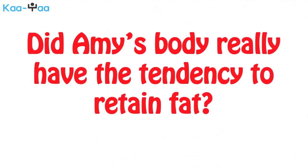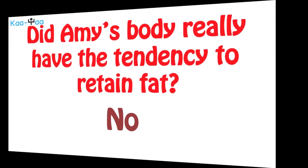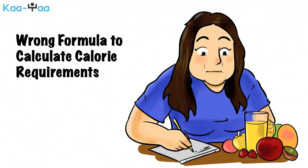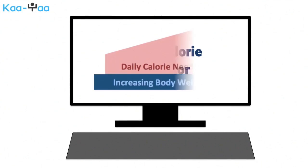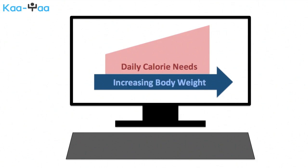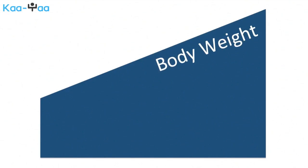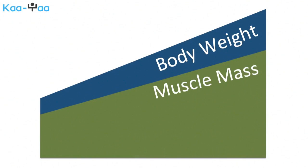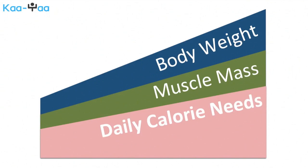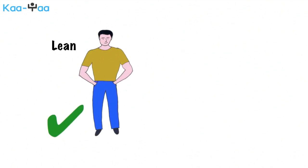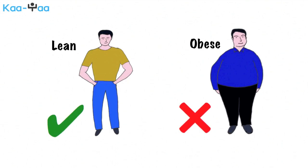Did Amy's body really have a tendency to retain fat? The answer is no. The problem actually was with the formula she used to calculate her daily calorie needs. Amy was using one of the generic online tools. Most of them assume that your daily calorie requirement increases with your body weight, based on the assumption that at higher body weight you have more muscle mass. Since all those muscles need energy to do work, higher is your calorie requirement. This argument holds true for someone who is lean and athletic, but breaks down for an obese person.